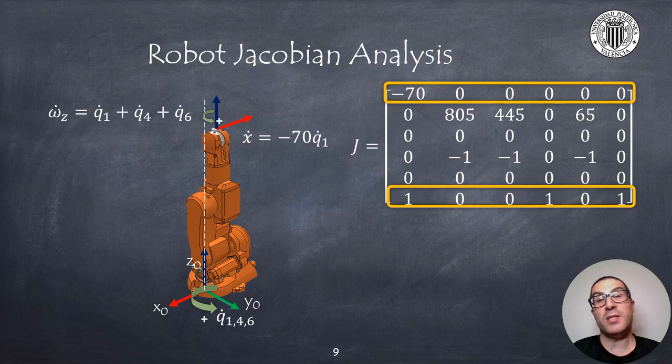This analysis is important because for instance if we want to implement the kinematic control we can use this Jacobian to determine which joint can we modify if we want to move on a specific direction.